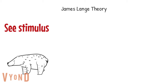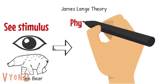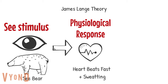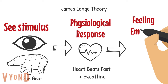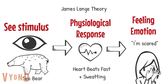The James-Lange theory argues that you first notice the stimulus, which in your case would be seeing a bear at your campsite. Then, because you see the bear at your campsite, you start having physiological responses — your heart starts beating really fast and you start sweating. So, because you are sweating and your heart starts beating quickly, you realize that you are scared. The James-Lange theory argues that emotions such as feeling fear are a result of how your body responds to a stimulus. In essence, it's saying that you feel fear because you start sweating and your heart starts beating fast.